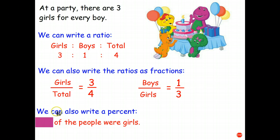And it turns out ratios can also be written as percents. So what percentage of the people were girls? Well, we first look at it as a fraction and say it was three quarters. And three quarters is a fraction. Hopefully, you know that that is 75%.